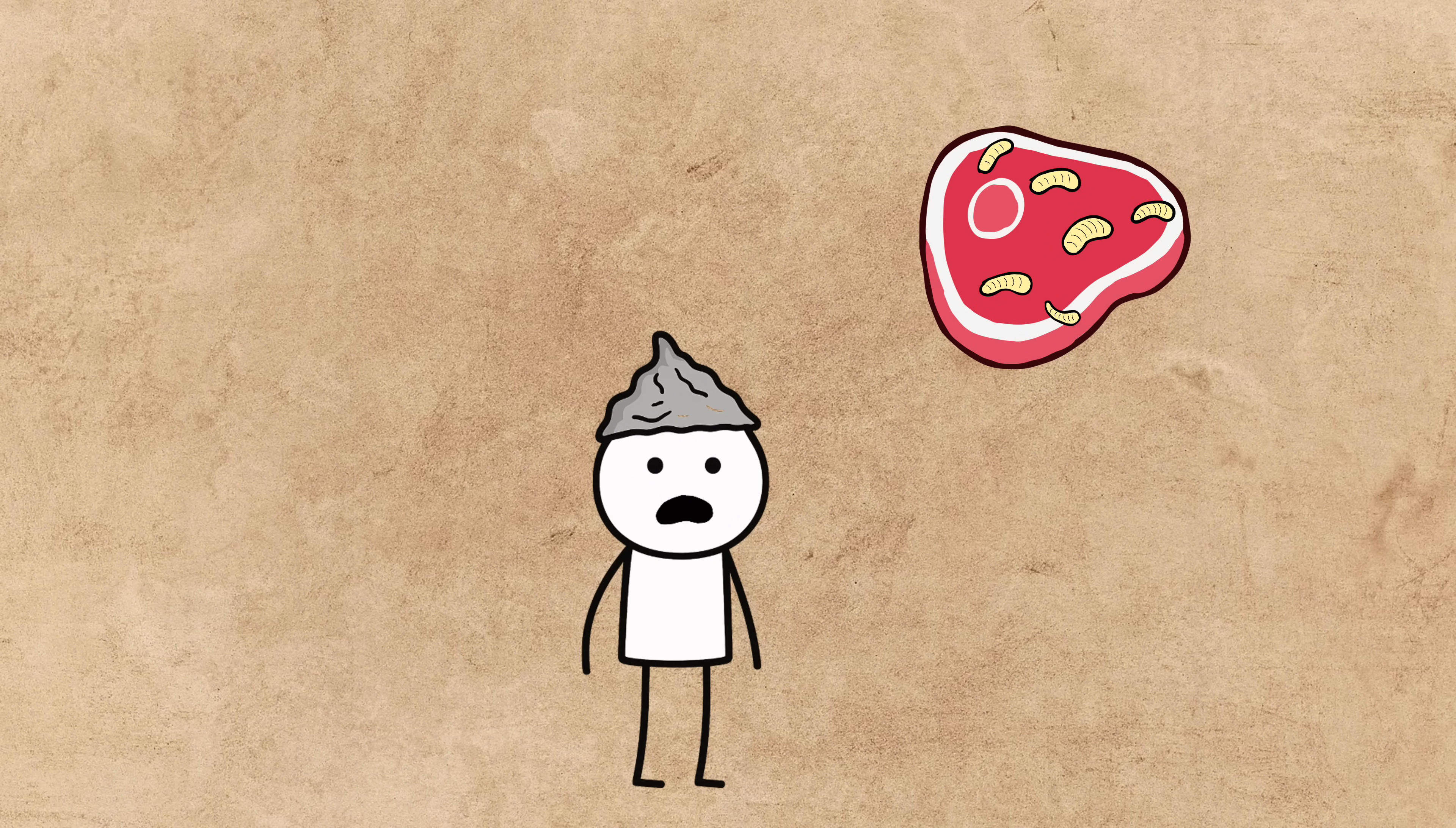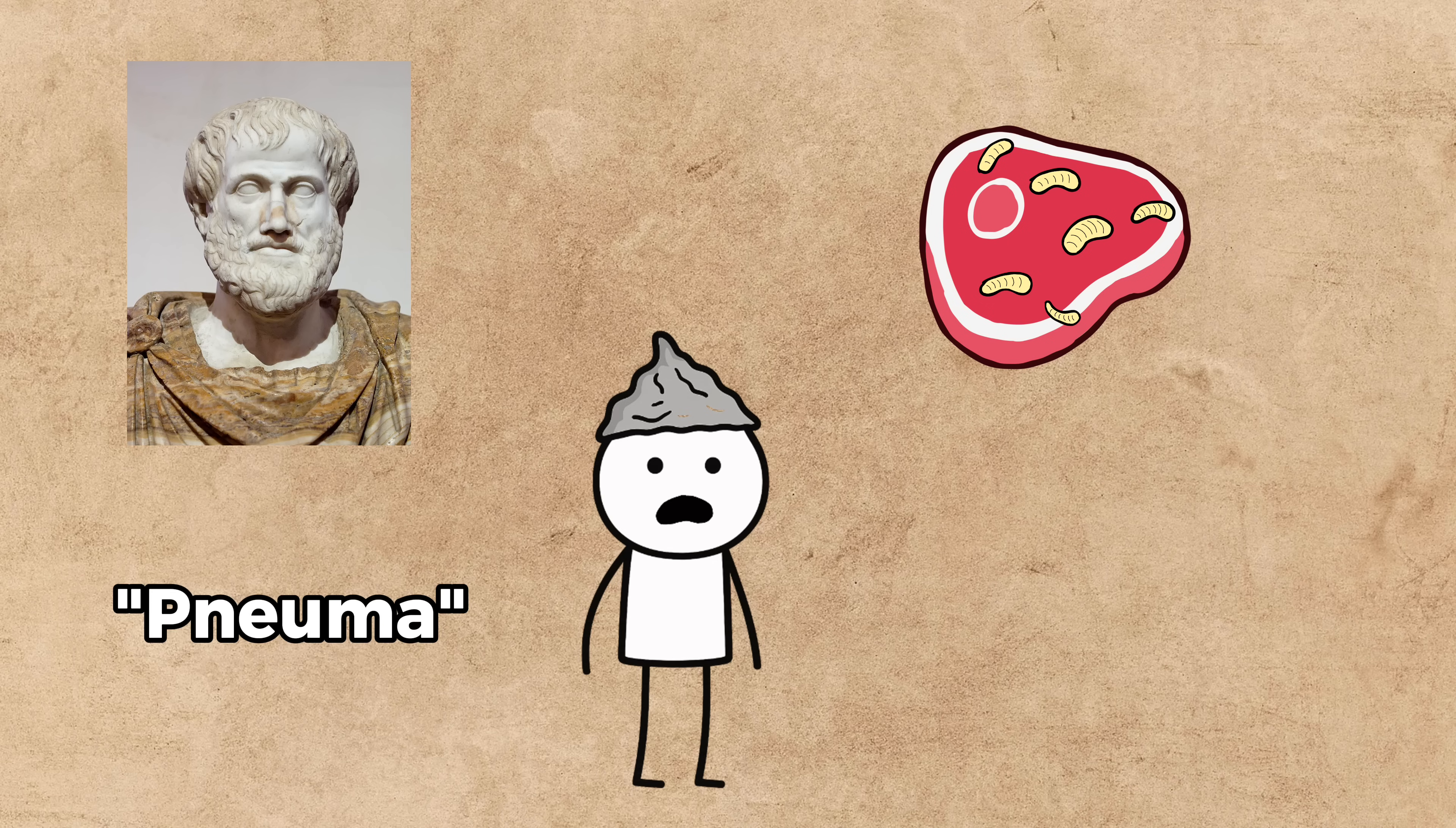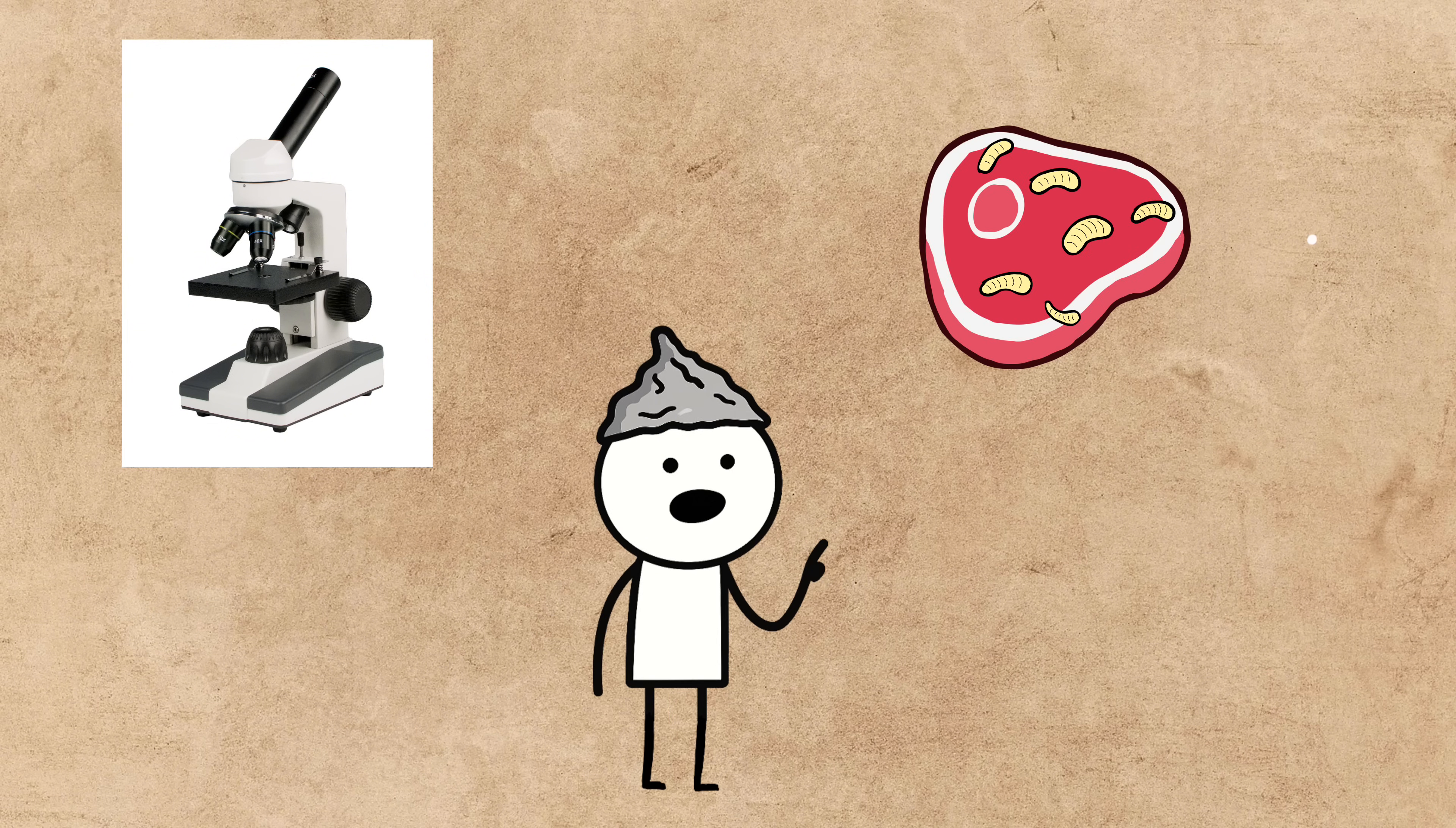It was formalized by none other than Aristotle himself. He proposed that non-living matter contained a vital heat, or pneuma, and if the conditions were right, poof, life. To be fair, without microscopes, you can kind of see how they got there. You leave food out, and suddenly it's crawling with life. It really does seem to appear from nothing.